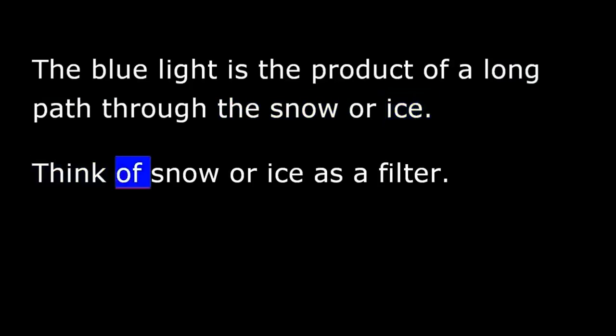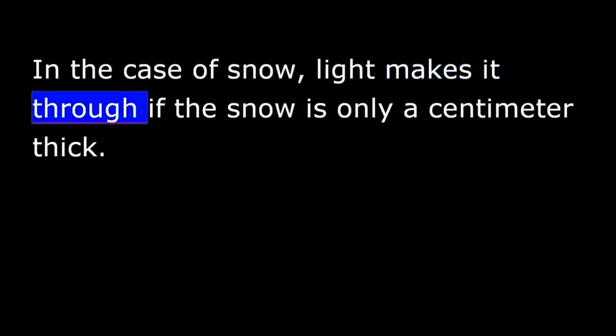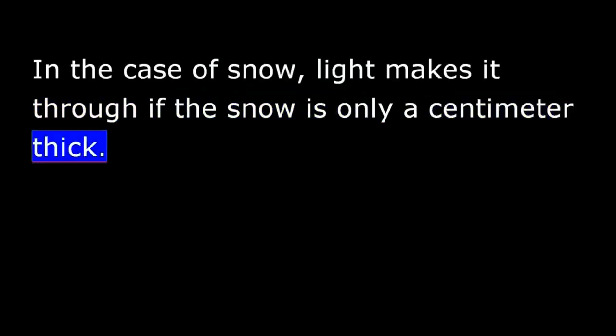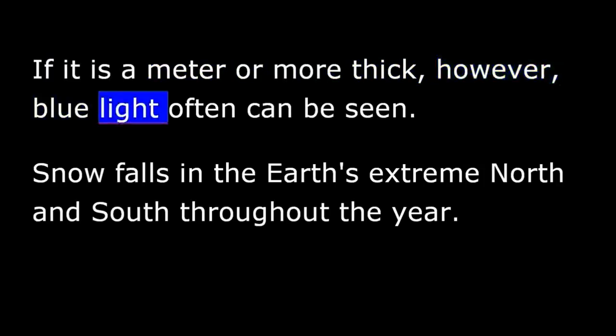Think of snow or ice as a filter. A filter is designed to reject some substances while permitting others to pass through. In the case of snow, light makes it through if the snow is only a centimeter thick. If it is a meter or more thick, however, blue light often can be seen.